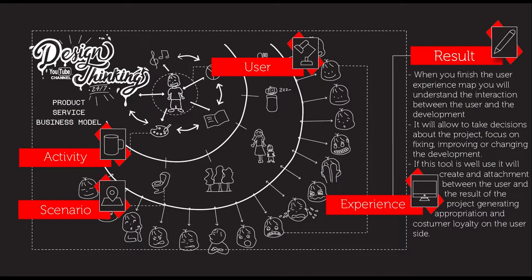As a result of the user experience map, when we finish, we will understand the interaction between the user and the development. It will allow us to take decisions about the project, focused on fixing, improving, or changing the development. If the tool is well used, it will create an attachment between the user and the result of the project, generating appropriation and customer loyalty. That is really important because that's what we want — we want to develop an attachment. If we realize that is not happening, we have to go back and try again until we develop that feeling on the side of the user.